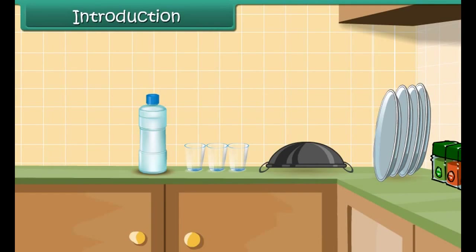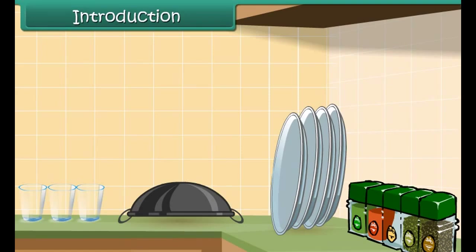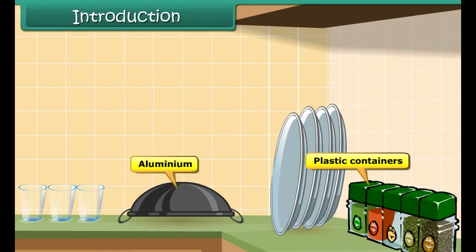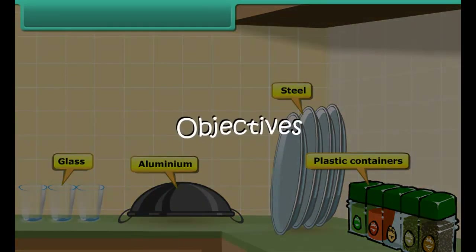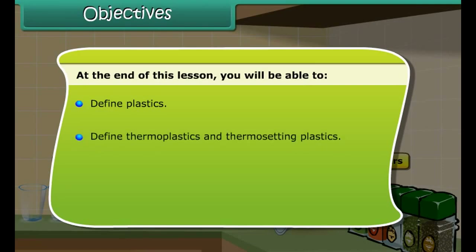Your kitchen shelves must be neatly arranged with rows of food containers mostly made up of plastics. Plastics have taken so much prominence in our lives now that we have replaced materials like aluminium, iron, steel and glass with plastics. So let us find out more about plastics in this lesson, where you will study about the general properties of plastics and their importance in our everyday lives.